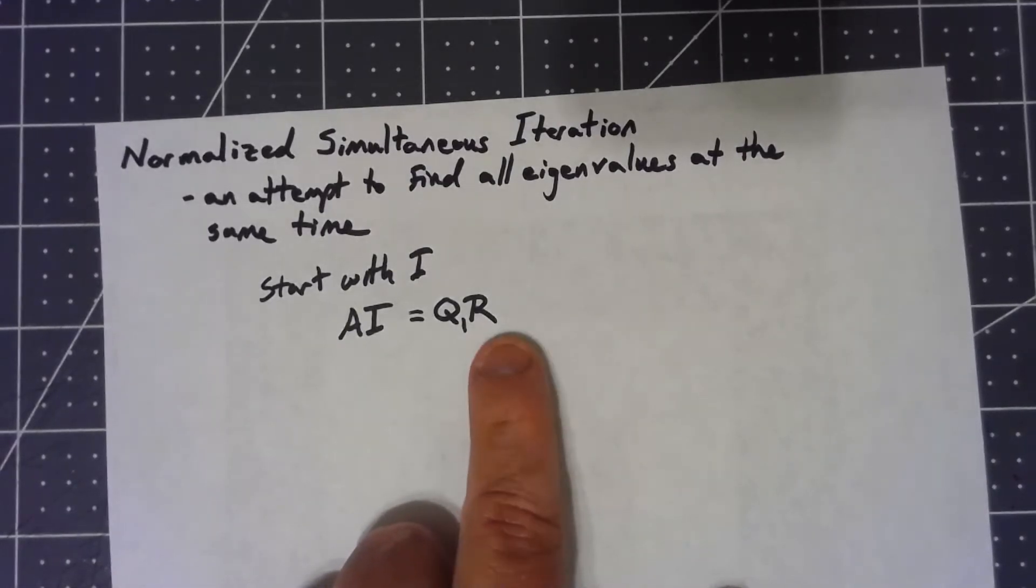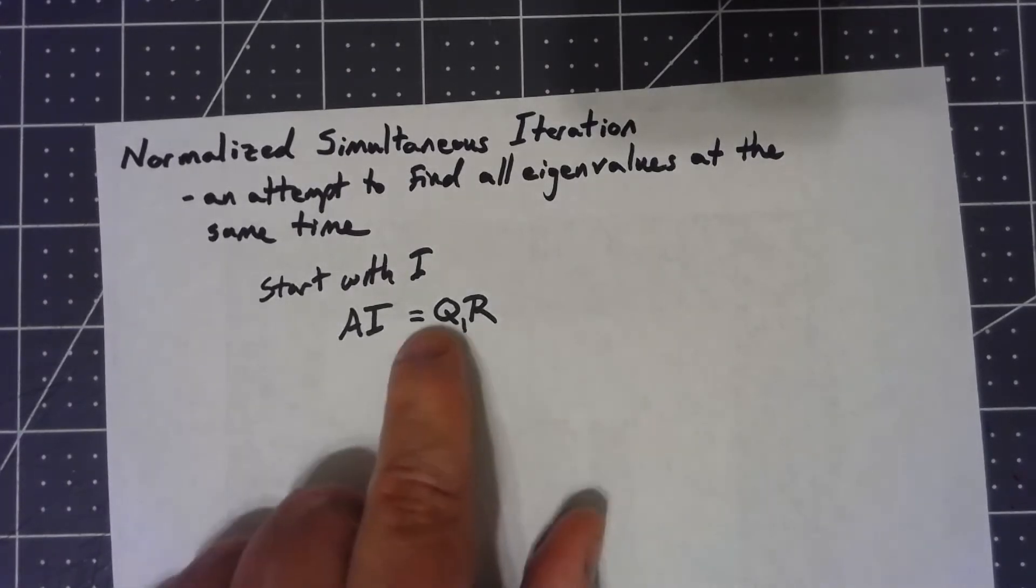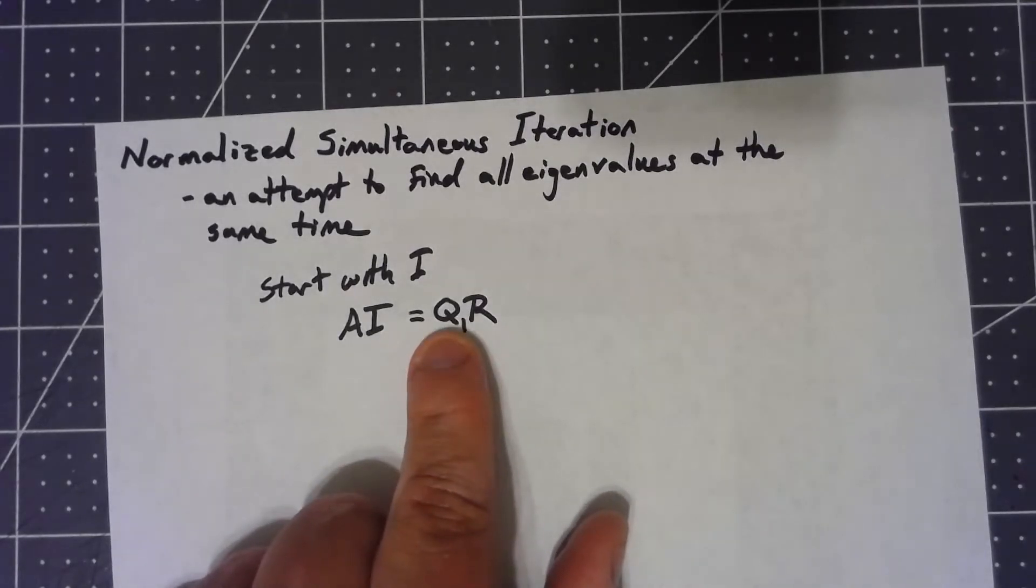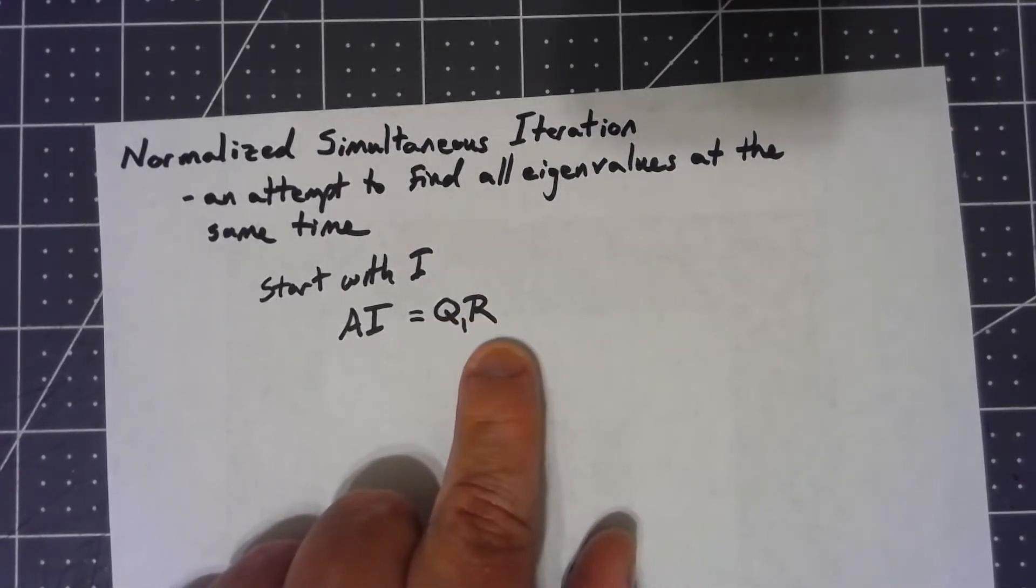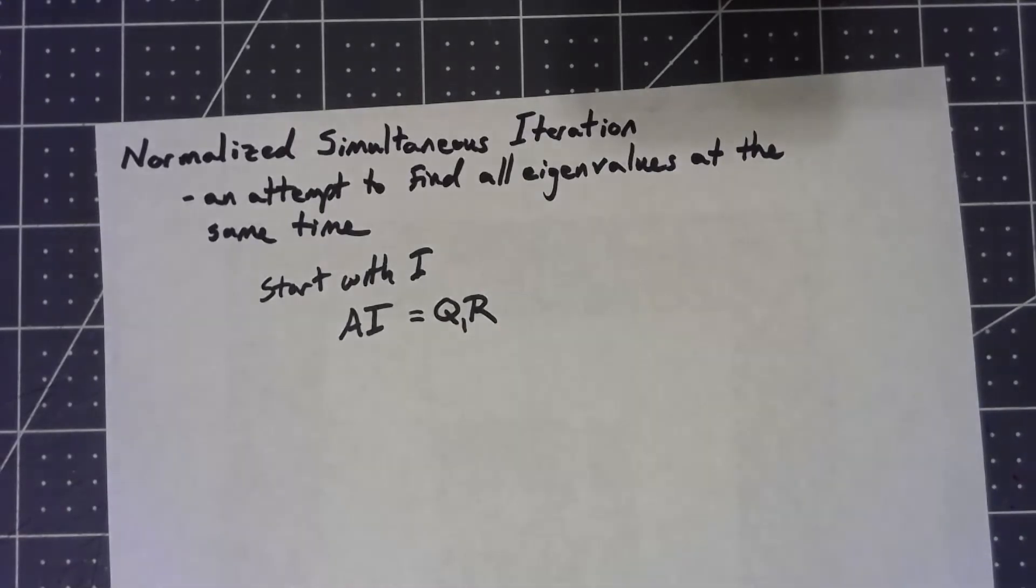Further, the R, I said, was an upper triangular matrix. In an upper triangular matrix, the eigenvalues are always the diagonal entries. So at the same time as getting the eigenvectors, we immediately get the eigenvalues as well, or again, at least we're converging toward them.